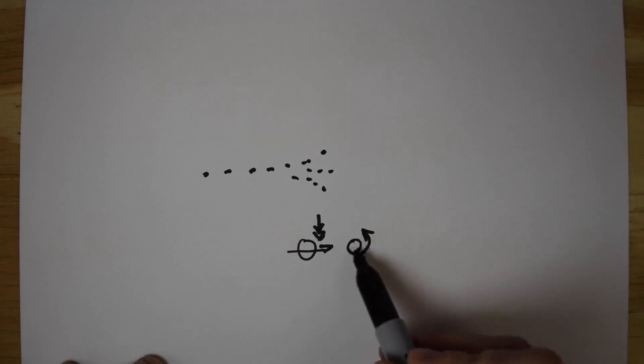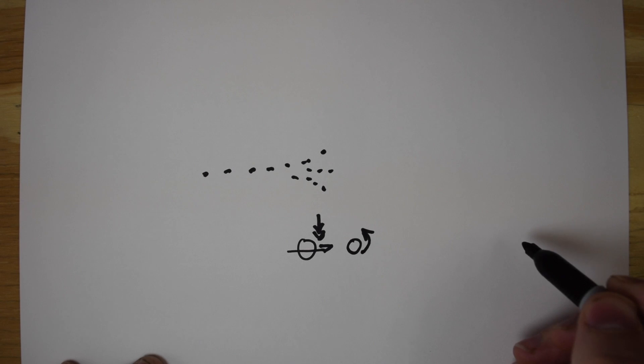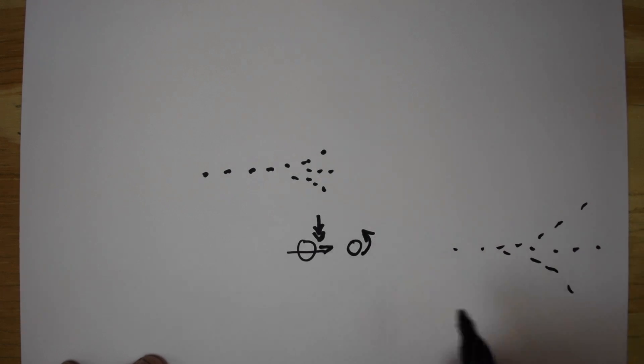Now, the amount of spin that you put on the BB is going to determine how much lift you get, whether it goes up or down, or it just flies nice and straight. The amount of spin is going to determine that.